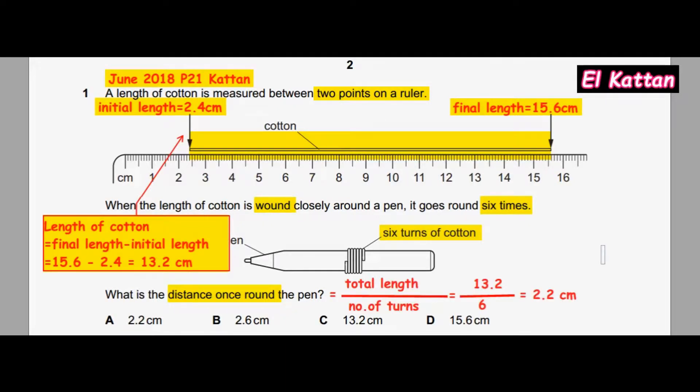Distance once around the pen equals total length divided by the number of turns: 13.2 divided by 6 equals 2.2 centimeters. Correct answer: A.